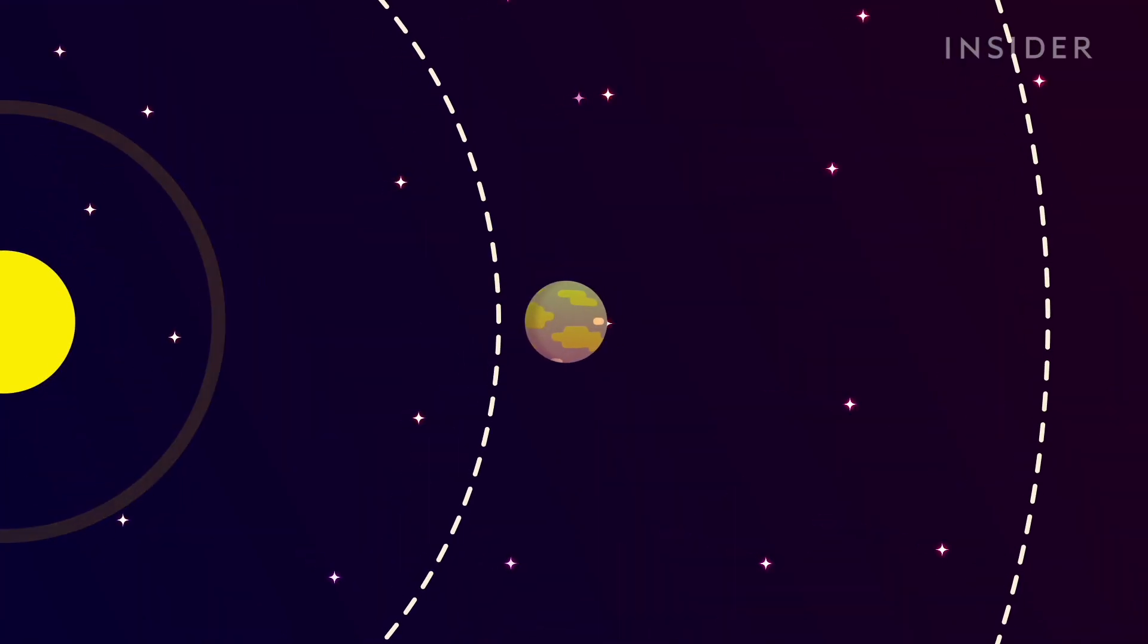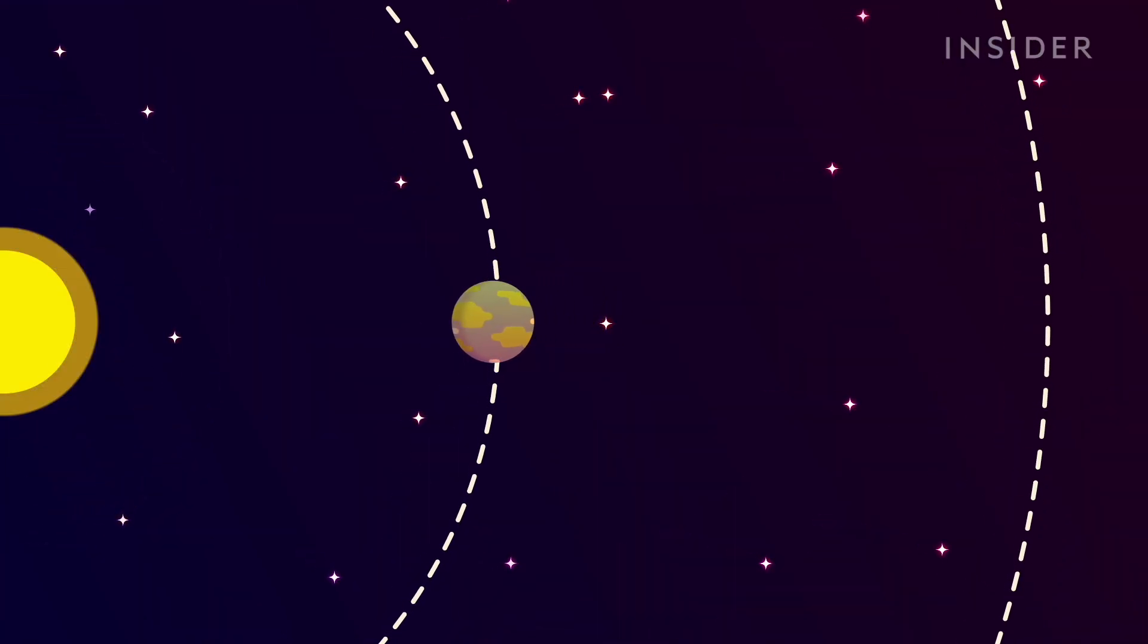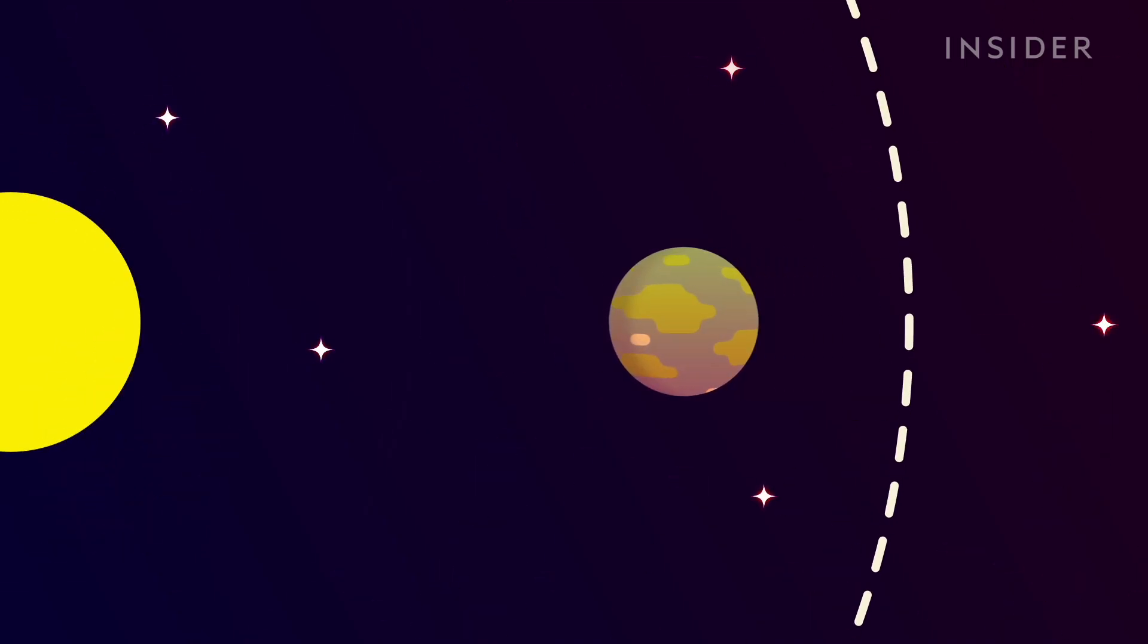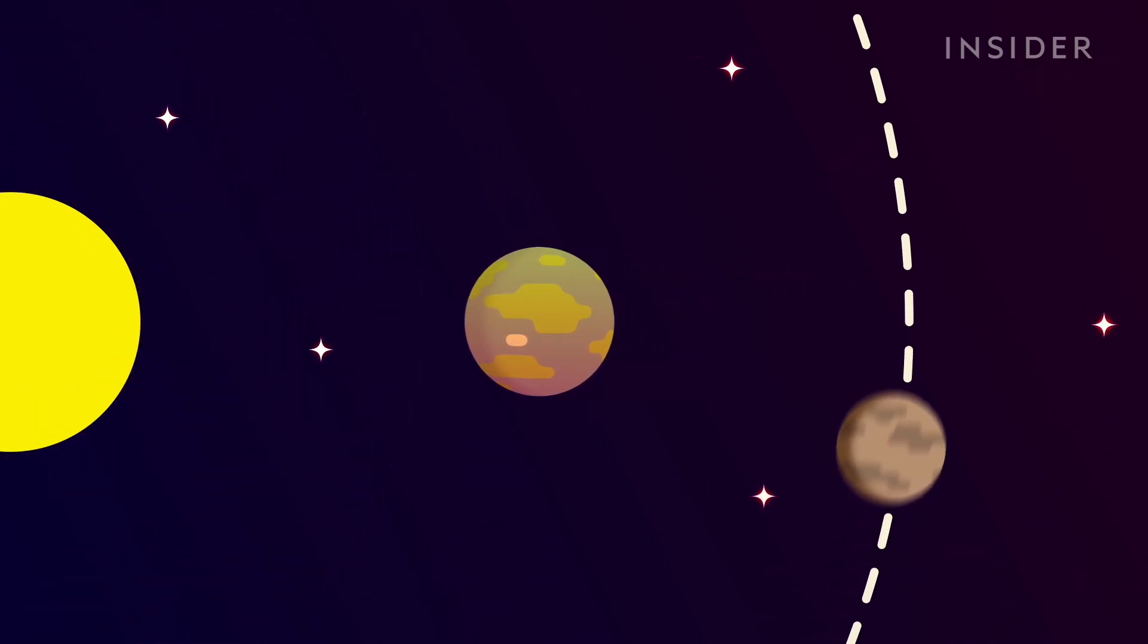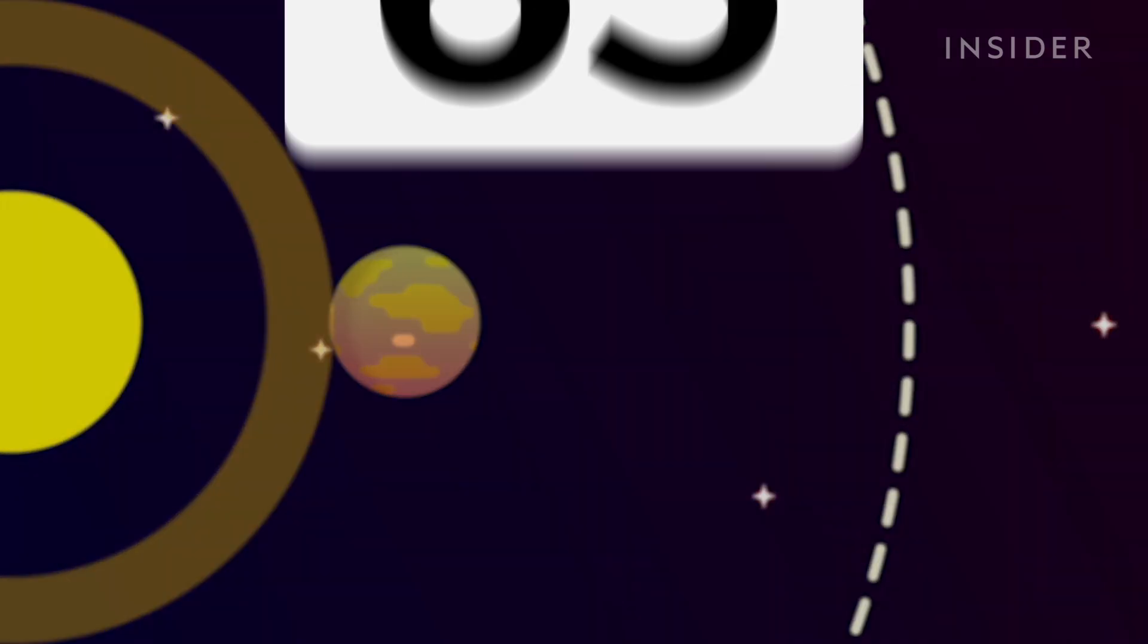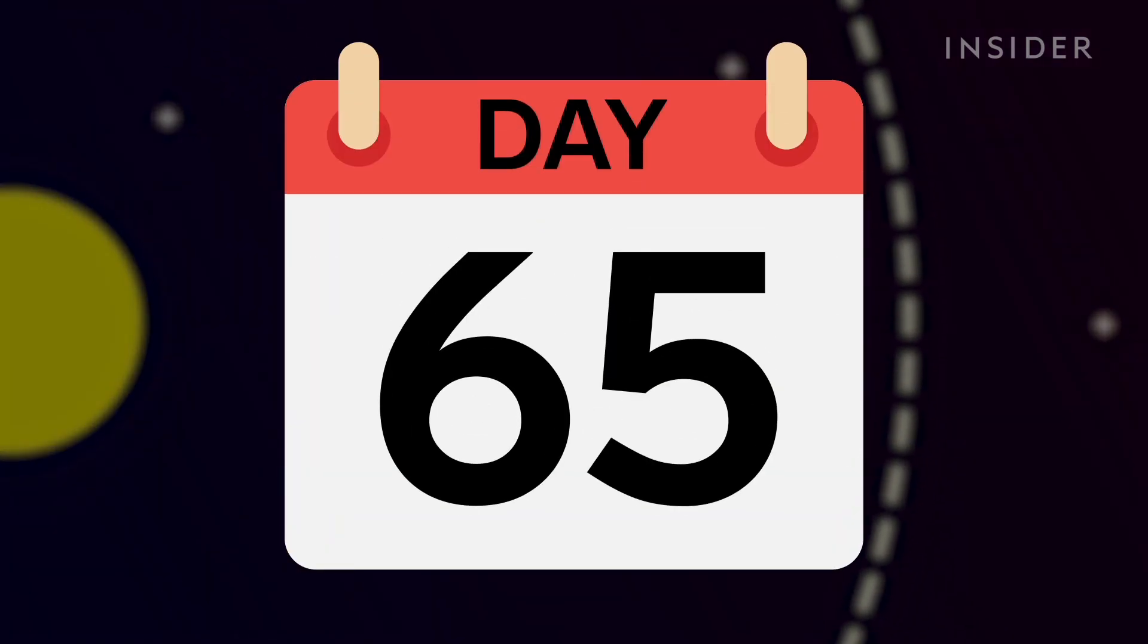Soon after, the barren planet crosses Mercury's orbit. For its last week of existence, Earth is the first planet from the sun. Until day 65, the final day.